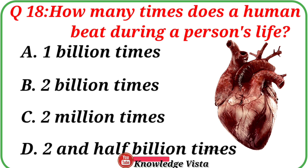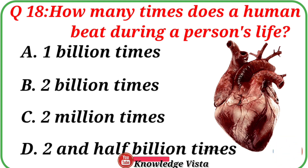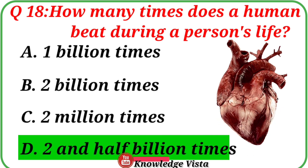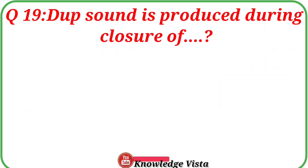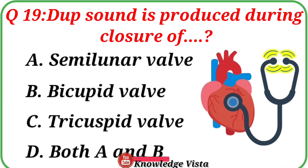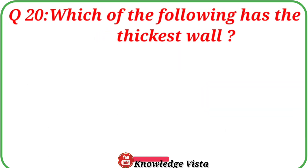Question No. 18. How many times does a human heart beat during a person's life? Your options are: A. 1 billion times, B. 2 billion times, C. 2 million times, D. 2 and a half billion times. Correct answer is option D: 2 and a half billion times. Question No. 19. The sound is produced during closure of. Your options are: A. Semilunar valve, B. Bicuspid valve, C. Tricuspid valve, D. Both A and B. Correct answer is option A: Semilunar valve.